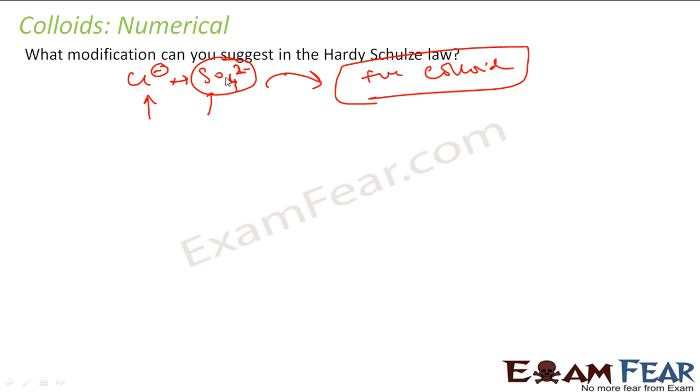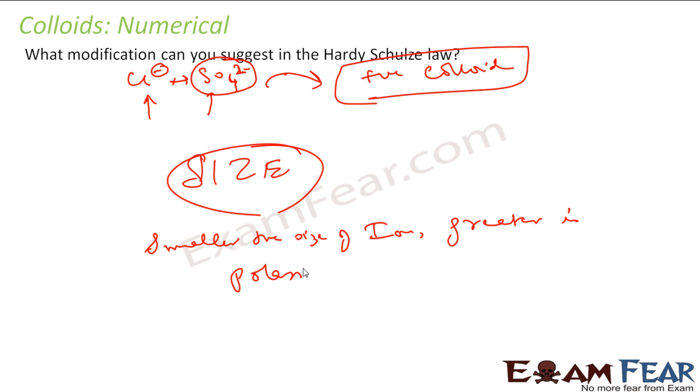The size of ions can also be taken into consideration. Then we can say that smaller the size of ion, because the smaller the size, more number of ions will fit in a particular milliliter. Smaller the size of ion, greater is polarizing power. So this is something which we can add to the Hardy-Schulze law - the greater the polarizing power.